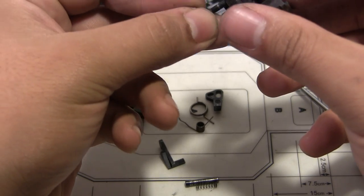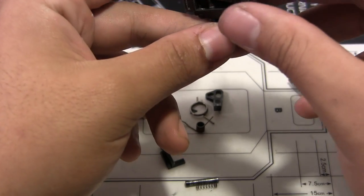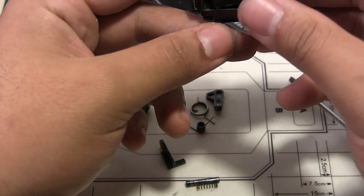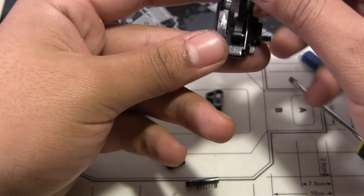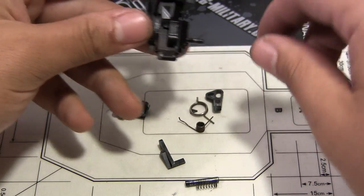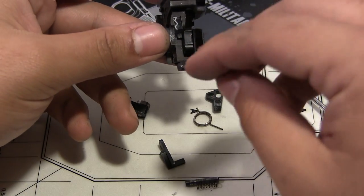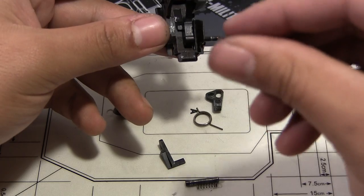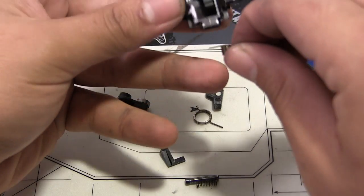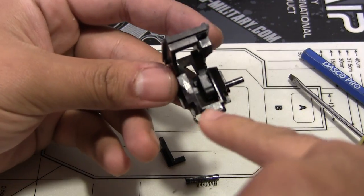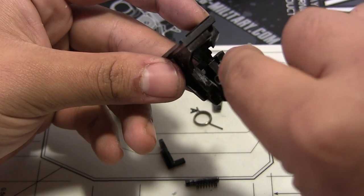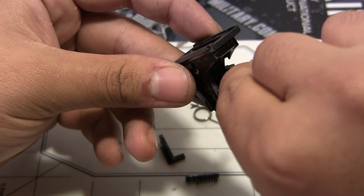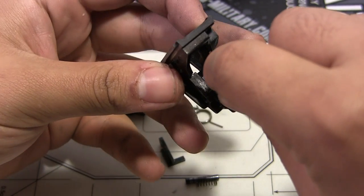And what you're going to do is put it through the other side. Make sure you get the sear in, and once you get the sear in, leave it halfway. And just get the spring. This spring, the straight edge is going on top of the sear. You see that little platform right there? It's going on top. If it's under it, it's not going to work.